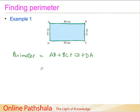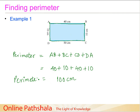Now we substitute the numbers: AB is 40 cm, BC is 10 cm, CD is 40 cm, and DA is 10 cm. Adding them up: 40 plus 40 is 80, plus 10 plus 10 is 20, giving us 100 centimeters. The unit of perimeter is a unit of length — centimeters here, though it could be meters in other examples. Perimeter is simply measuring the length going around the figure once.